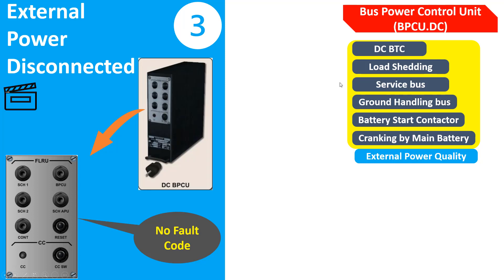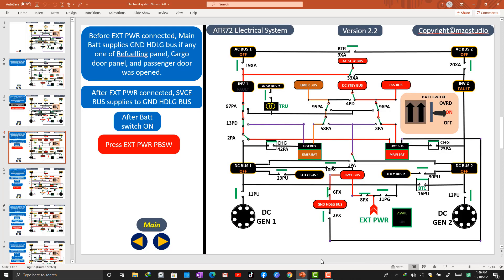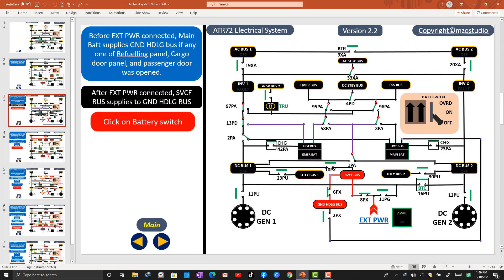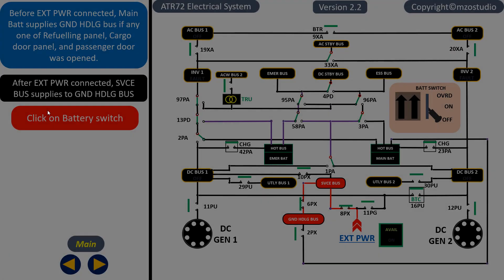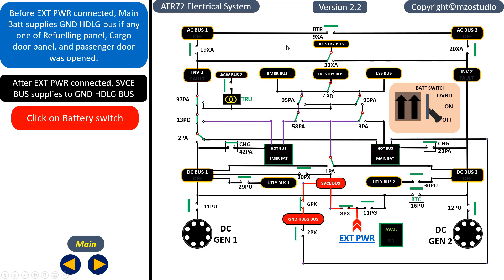So this is the problem. Let's go to the electrical system. This is the ATR 72 electrical system. We have DC bus 1, DC bus 2, and bus tie 1, bus tie 2. The aircraft external power supplies to the bus through the bus tie contactor and supplies to DC power.